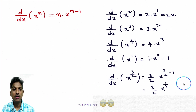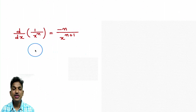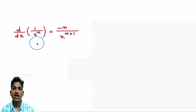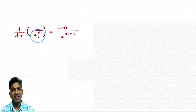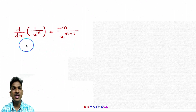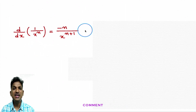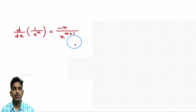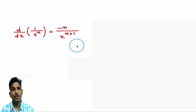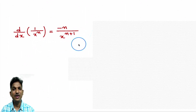Now we are going to do one interesting formula — you may not find this in any book. d/dx of 1/x power n. This formula comes from the previous formula only, since 1/x power n is x power minus n. Because we use this very frequently, I have taken it as a formula. d/dx of 1/x power n is minus n divided by x power n plus 1.